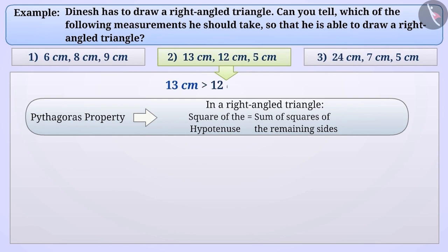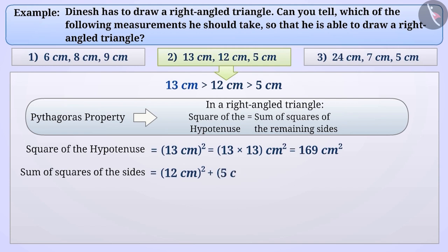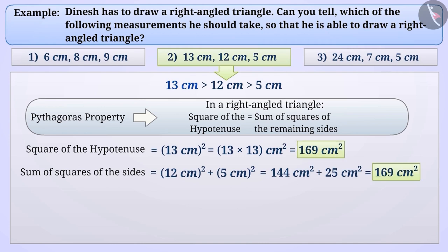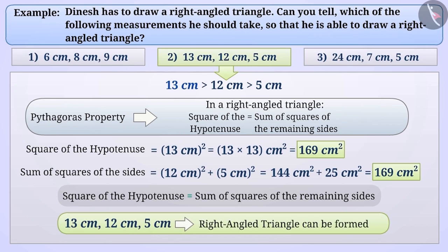In the second statement, the largest value is 13 cm, so it can possibly be the measure of the hypotenuse. The square of the hypotenuse = 13² = 13 × 13 = 169 cm². The sum of the squares of the remaining sides = 12² + 5² = 144 + 25 = 169 cm². Since the square of the hypotenuse equals the sum of the squares of the remaining sides, 13 cm, 12 cm, and 5 cm can form a right-angled triangle.